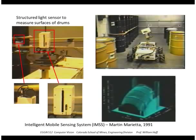This is an example I actually built at Martin Marietta. I built a laser light stripe projector mounted on a pan-tilt mechanism, with the camera offset with respect to it, mounted on a robot that would scan drums to get their shape. By swinging the light stripe across the scene, the camera picks up the points and assembles them into a 3D shape.